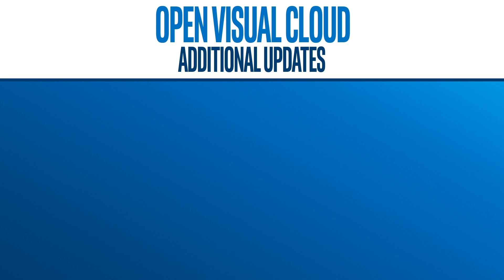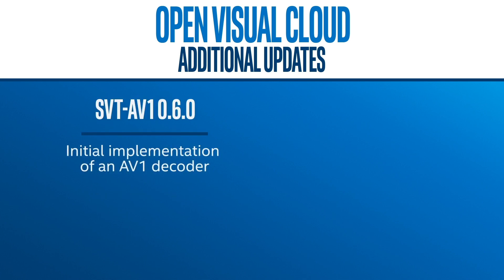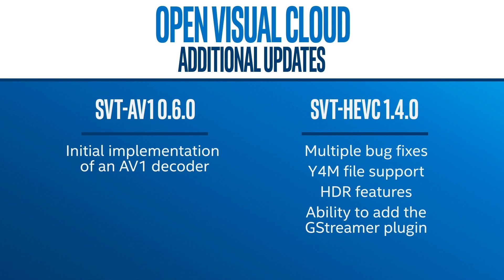There are also two updates: SVT AV1 0.6.0 and SVT HEVC 1.4.0. The SVT AV1 update includes initial implementation of an AV1 decoder, and the SVT HEVC updates include multiple bug fixes. The major features added include Y4M file support, HDR features, and the ability to add the GStreamer plugin.